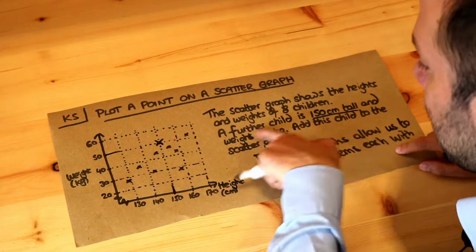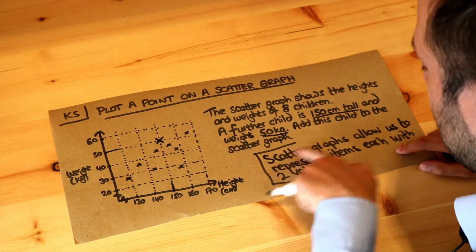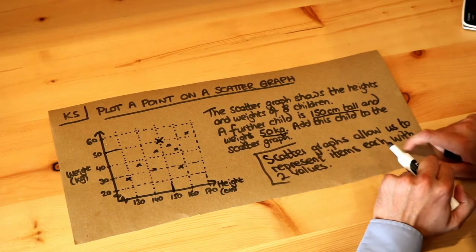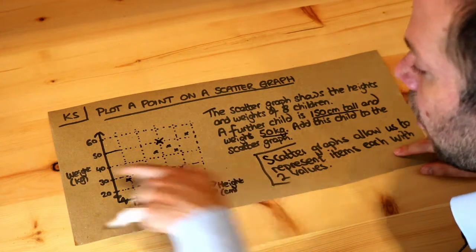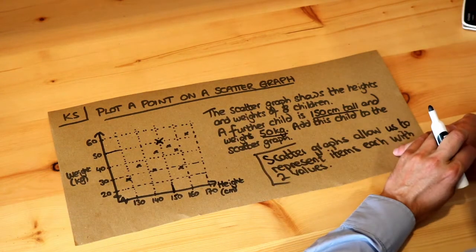So that point there represents this extra child. And remember that scatter graphs allow us to represent items with two values. So each child can have two values: a height and a weight in this particular case.